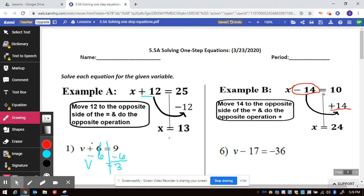So here, the opposite of minus 17 is going to be plus 17. What you do to one side of the equal sign, you then do to the other side of the equal sign. The 17s cancel out and v equals negative 19.